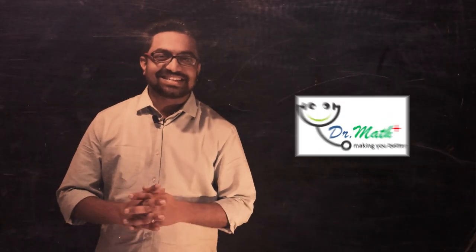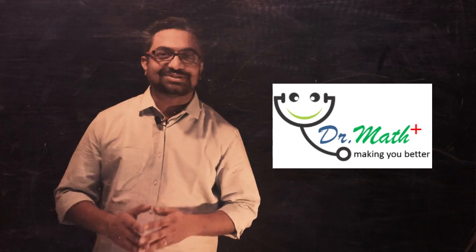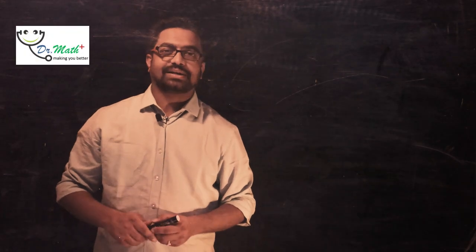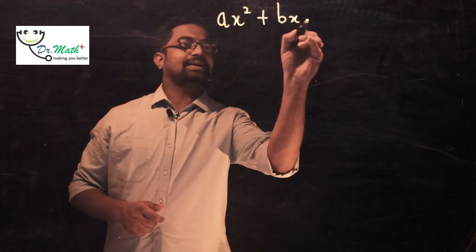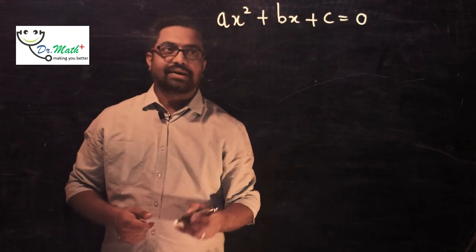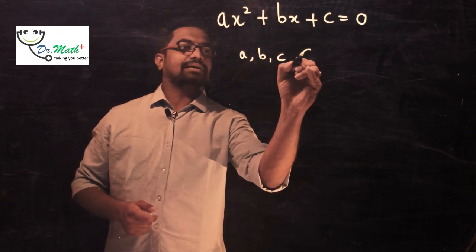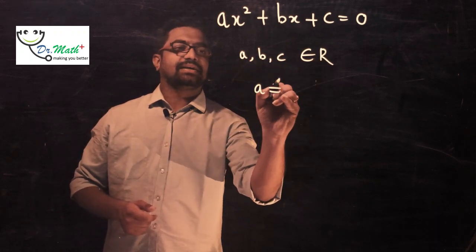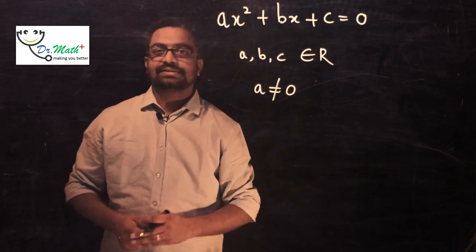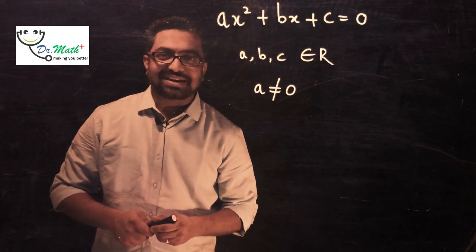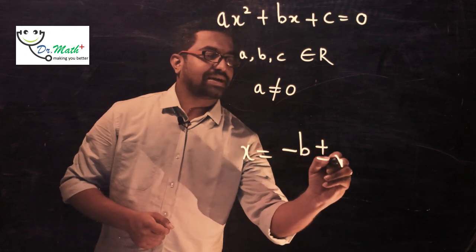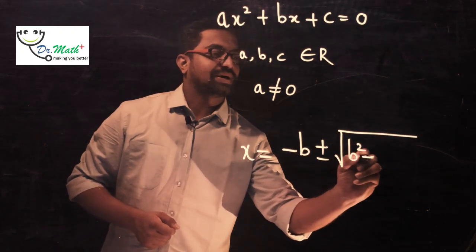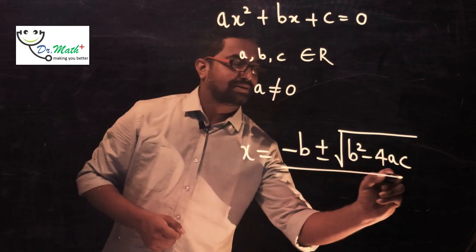Hello everyone, let's learn math together with Dr. Math. We all know that there is a quadratic formula to solve a quadratic equation of the form ax² + bx + c = 0, where a, b, c are real numbers such that a ≠ 0, and x is the variable. The quadratic formula is x = (−b ± √(b² − 4ac)) / 2a.